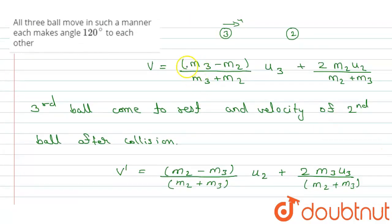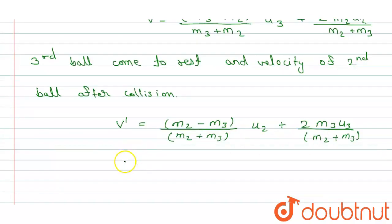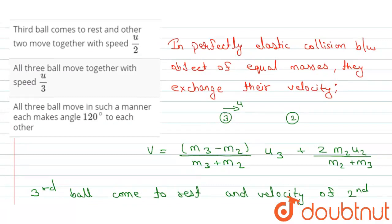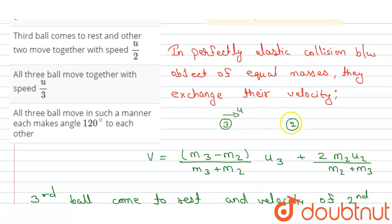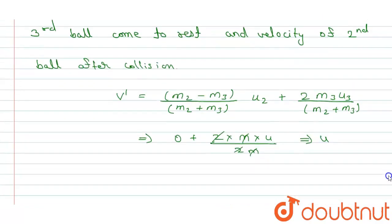So it will be equal to 0 plus 2 times m into u, because here the masses are equal, into 2m. So here 2 is cancelled and m is also cancelled, and here the velocity of second ball is u. It means the velocity of third ball is converted, exchanged with the velocity of second ball. It means the velocity of third ball is 0 and now the velocity of second ball is u.